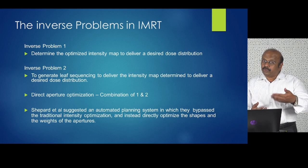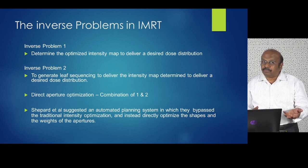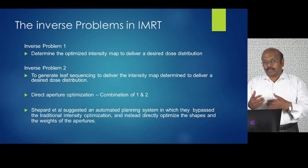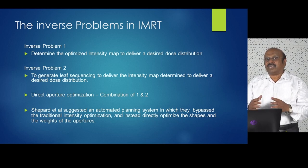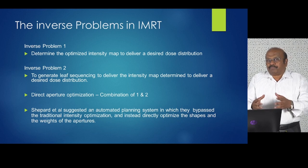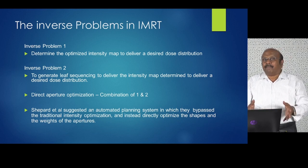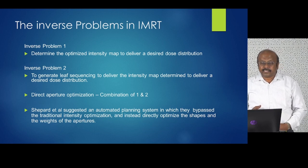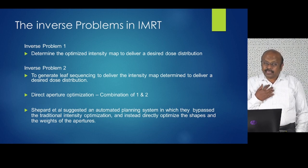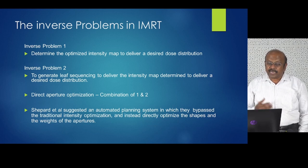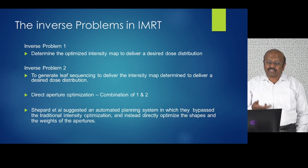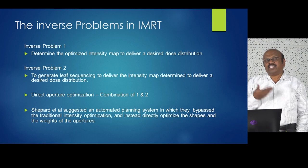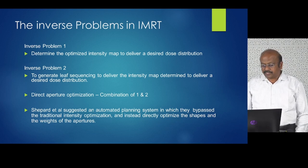In the original approach, when you compute the fluence map, you don't know what the aperture will be, and then you must solve another inverse problem to arrive at an aperture to deliver that fluence map. In direct aperture optimization, both are combined. Shepard et al. suggested an automatic planning system that bypasses traditional intensity optimization and instead directly optimizes the shape and weights of the apertures.